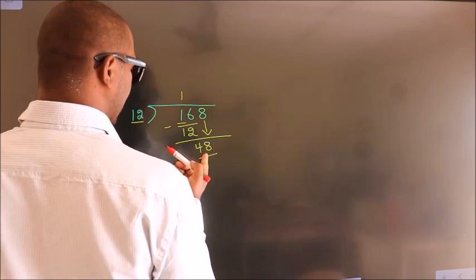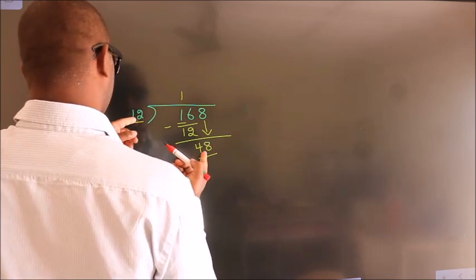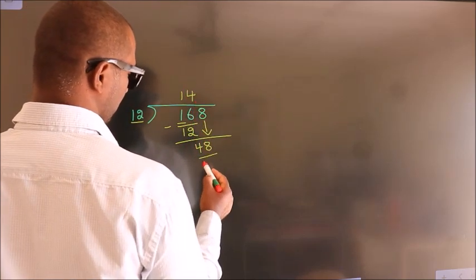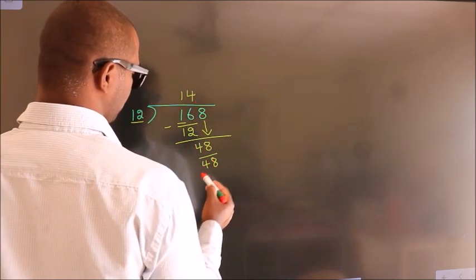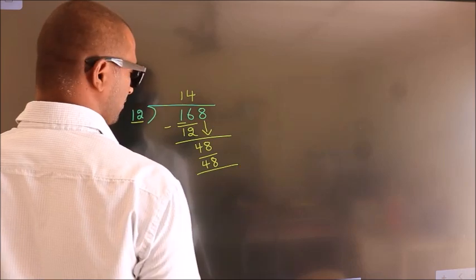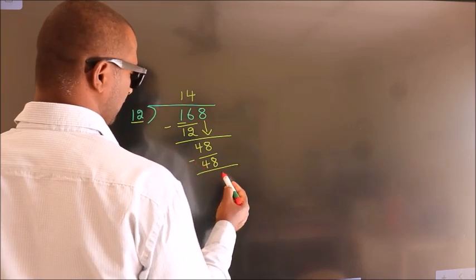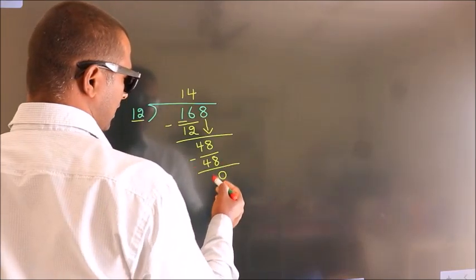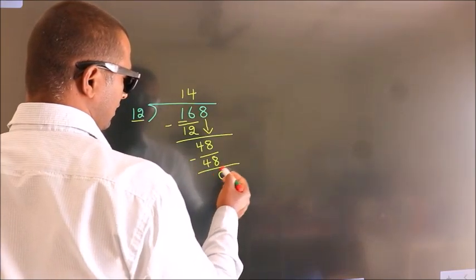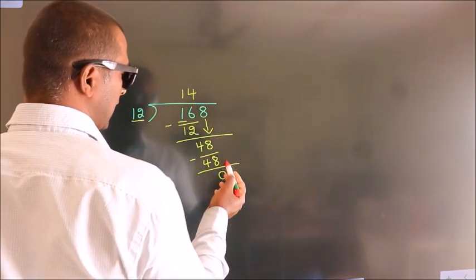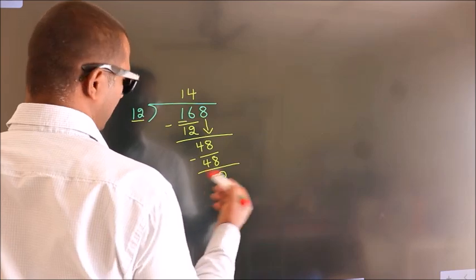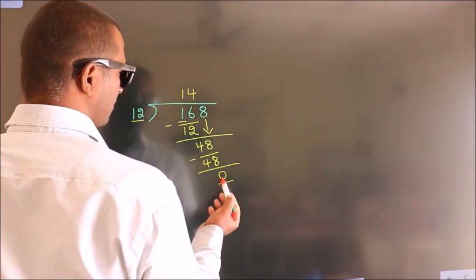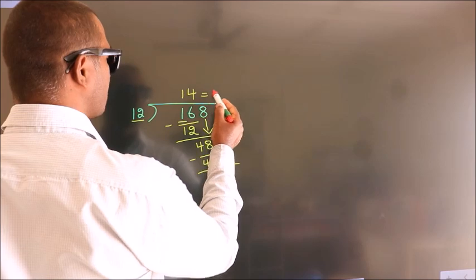When do we get 48 in the 12 table? 12 fours are 48. Now we subtract. We get 0. After this, no more numbers to bring down. And we got remainder 0. So this is our quotient.